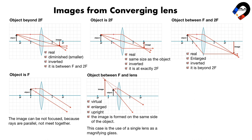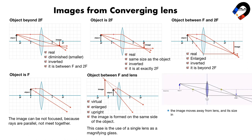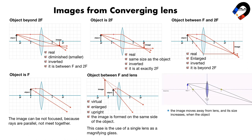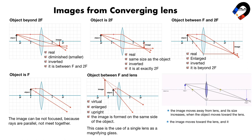This case is the use of a single lens as a magnifying glass. We can see that the image moves away from the lens and its size increases when the object moves toward the lens.